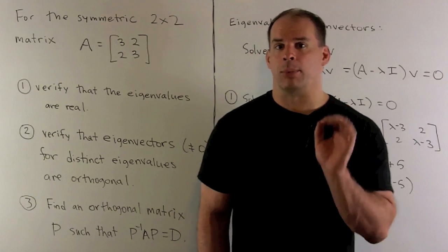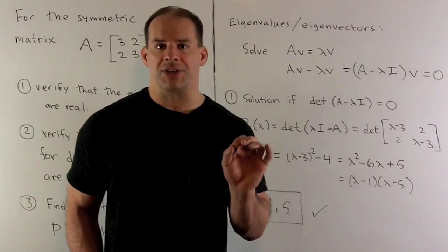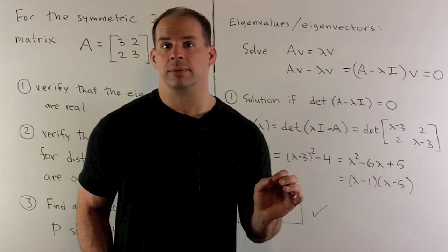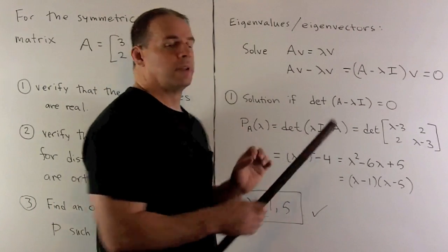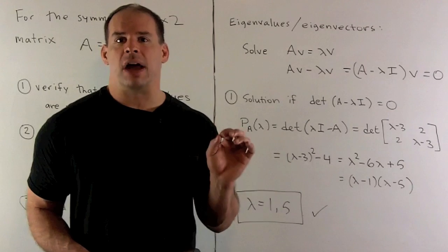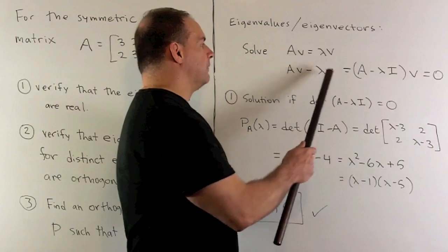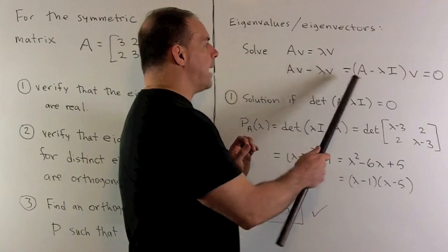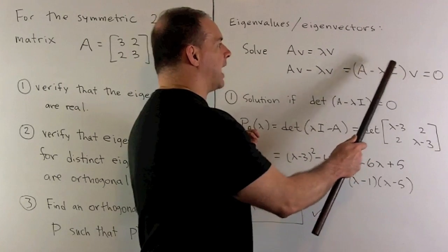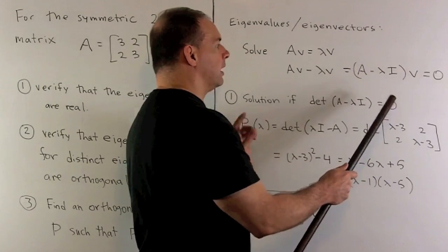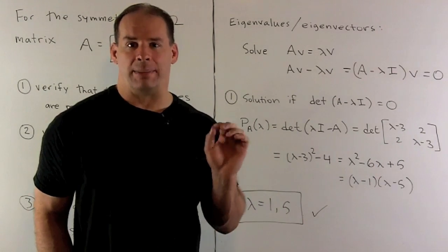Step one: to verify that the eigenvalues are real. We start with the eigenvalue equation: take our matrix A, multiply it by a vector V. If V is an eigenvector, what we get back is some scalar lambda times V. Pushing lambda V to the other side, we can factor to get A minus lambda I times V equals zero. The idea is lambda I times V equals lambda V, and we set that equal to zero. So we're finding the null space of A minus lambda I.